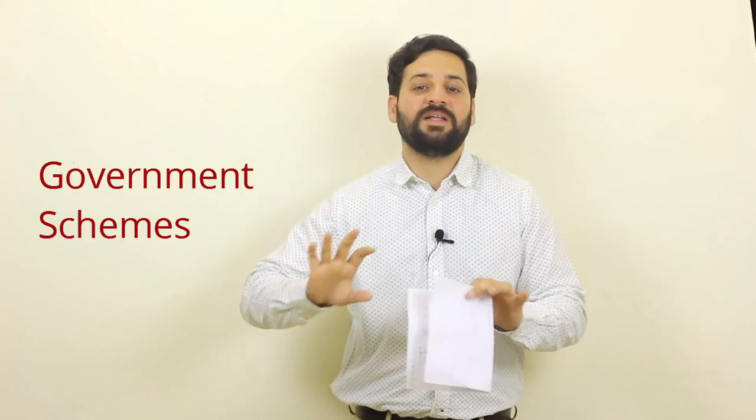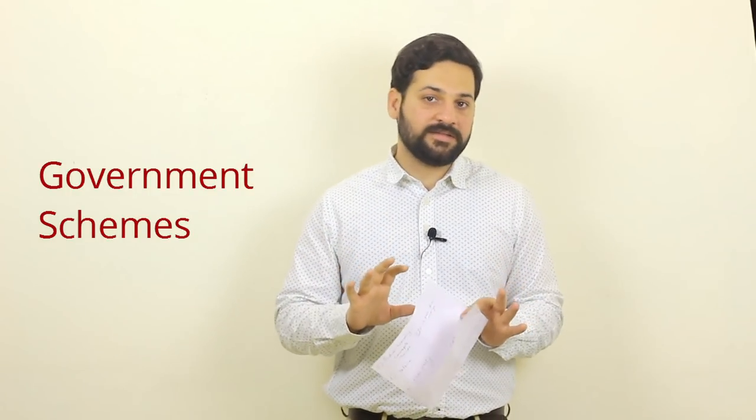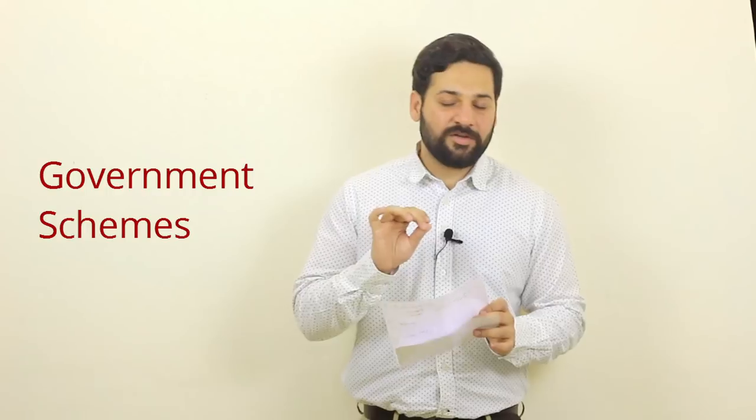The next topic is government schemes. There are various schemes released by central and state governments, and this is very important for the NABARD Grade A ESI paper. Key schemes relate to women empowerment, poverty alleviation, educational schemes, industrial and commercial reforms, labor policy, environment, employment, and gender issues.